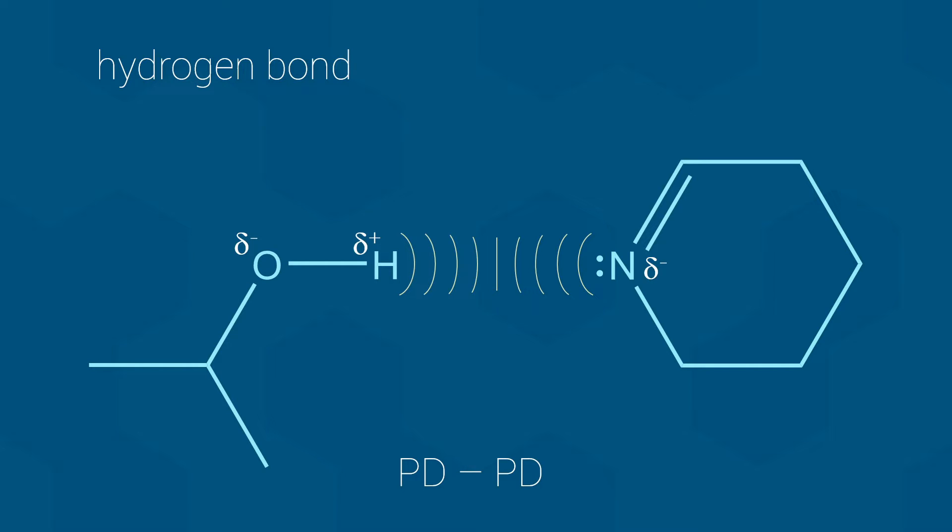Please note that in the structure shown here, I have not included the partial positive charges on the ring structure, but they do exist. So far, this is a typical permanent dipole to permanent dipole interaction. However, hydrogen bonds have certain required features that are not shared by all permanent dipole based interactions.